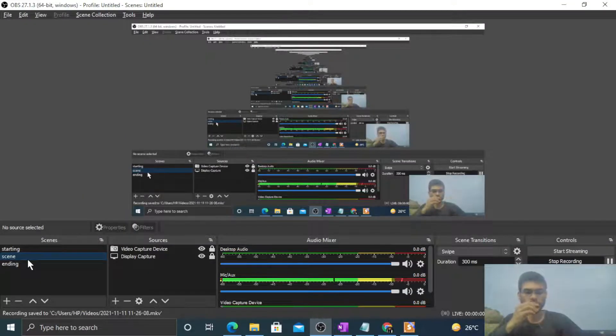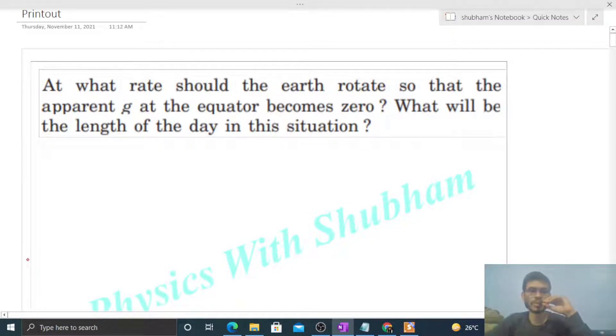Okay, hi everyone. Today let's discuss this interesting problem. It says: at what rate should the earth rotate so that the apparent g at the equator becomes zero? What will be the length of the day in this situation?